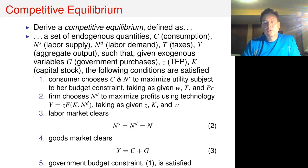First, consumers are maximizing utility. Second, firms are maximizing profits. Both consumers and firms behave competitively, so they take prices as given.